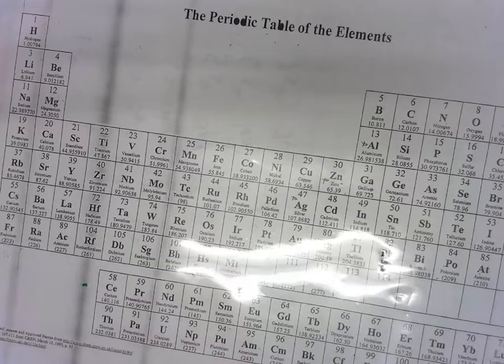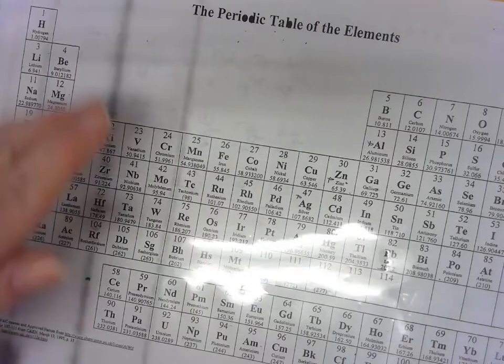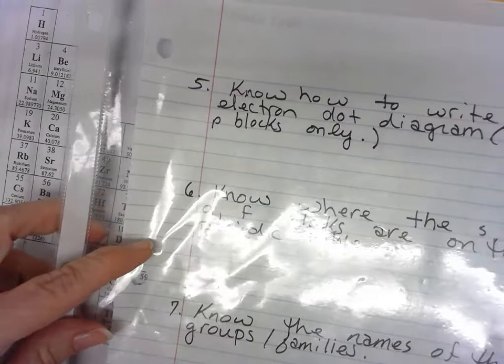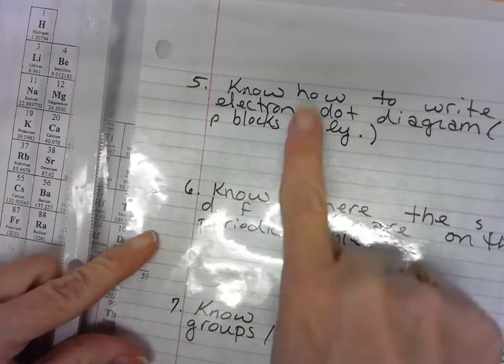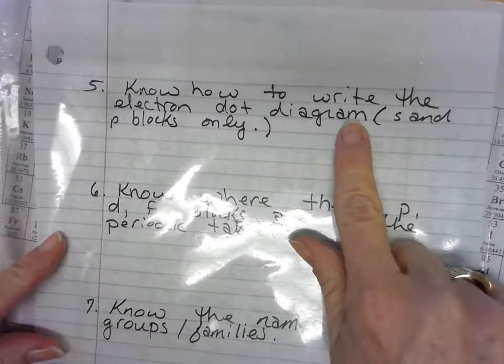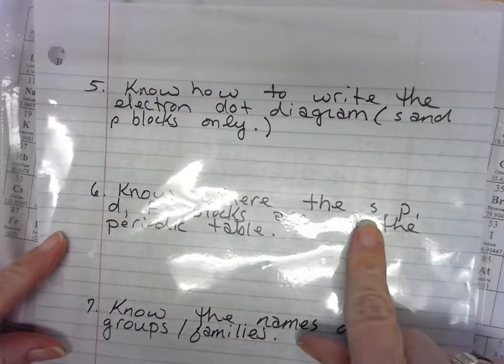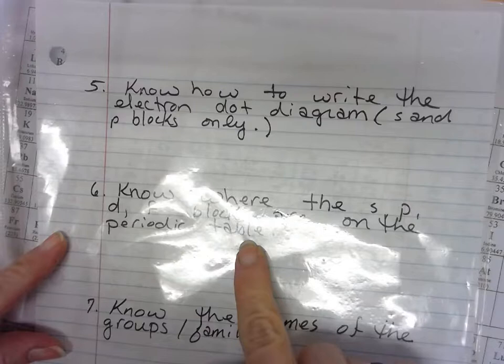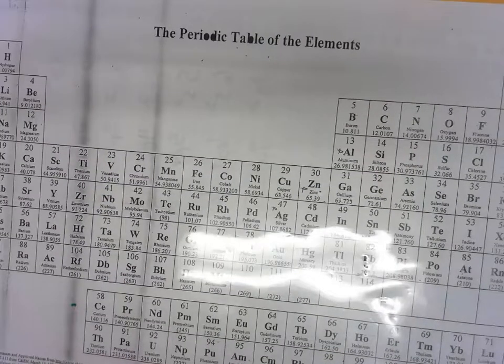So I'm going to piggyback this explanation off of these other two questions that you're going to have. Know how to write the electron dot diagrams for your main block elements, which are your S and P. And I also need you to know where your S and P and D and F blocks are on the periodic table. So I'm going to do all three of those at one time.